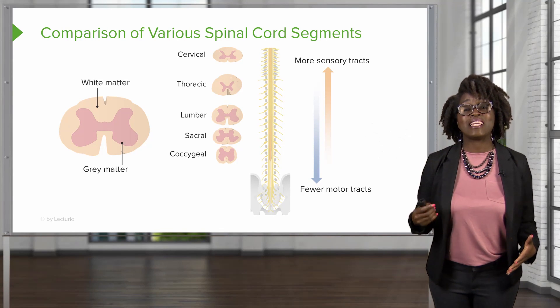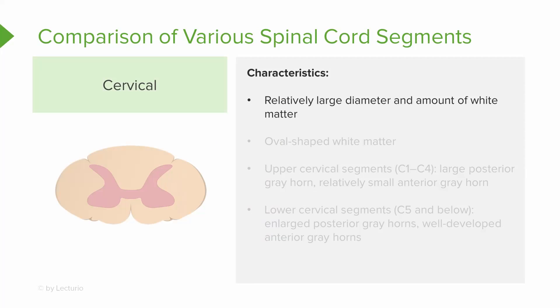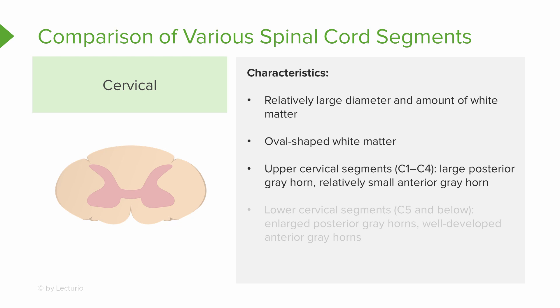Now let's take a closer look at each of the segments. First we start with the most superior, or the cervical segment. This segment has a relatively large diameter and has a large amount of white matter. It is also in an oval shape. The upper cervical segments have a large posterior gray horn and a relatively small anterior gray horn. The lower cervical segments, for C5 and below, have an enlarged posterior gray horn as well as an anterior gray horn that is well developed.